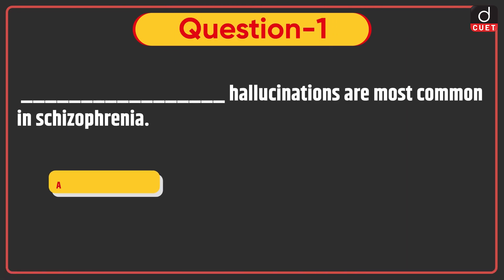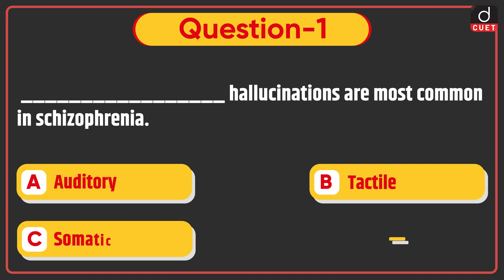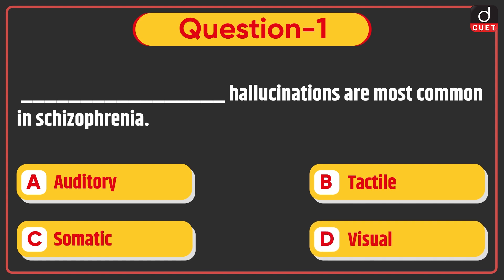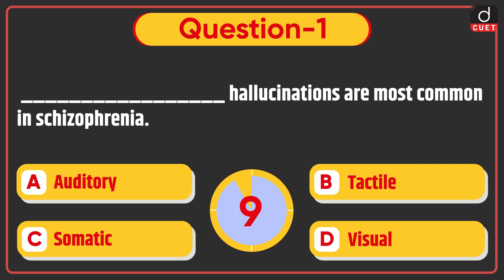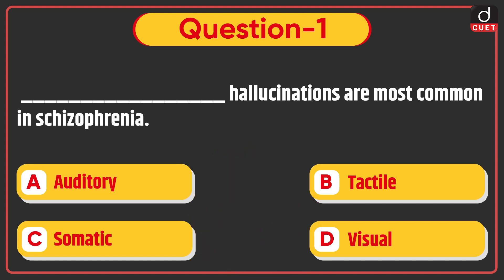Now let's begin today's session. First question is: Dash hallucinations are most common in schizophrenia — Auditory, Tactile, Somatic, or Visual? The correct answer is option A, Auditory.